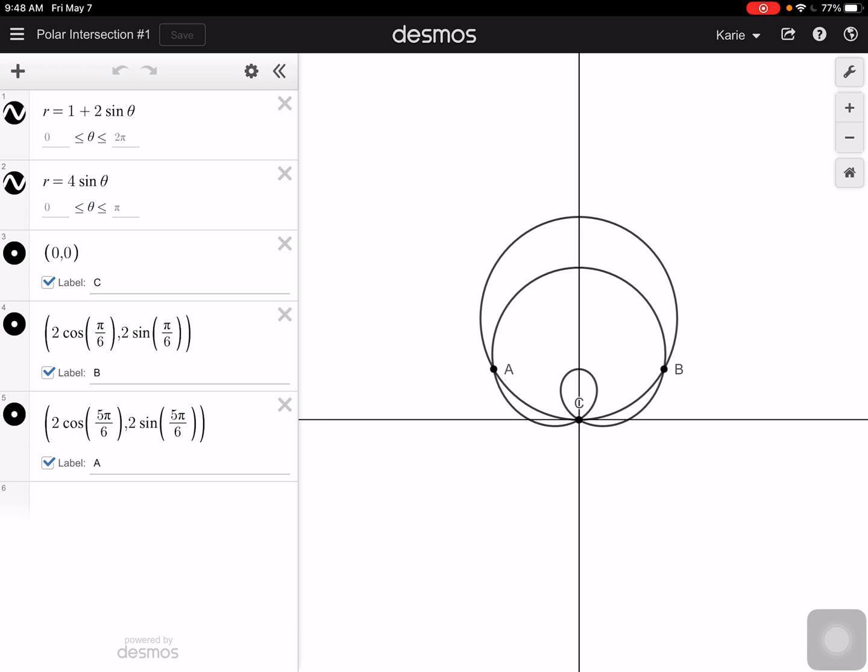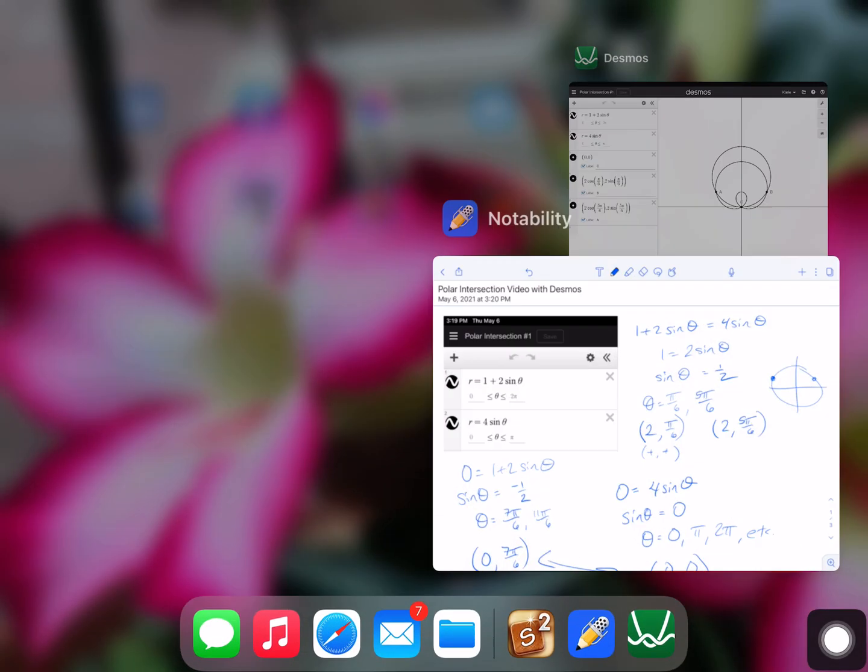In this particular situation, I've got these two polar graphs, and they're intersecting here at points A, B, and then the pole here at C. So we can take these two and set them equal. I came along and said, okay, 1 plus 2 sine theta is equal to 4 sine theta. I solve. I come down to sine is equal to 1 half.